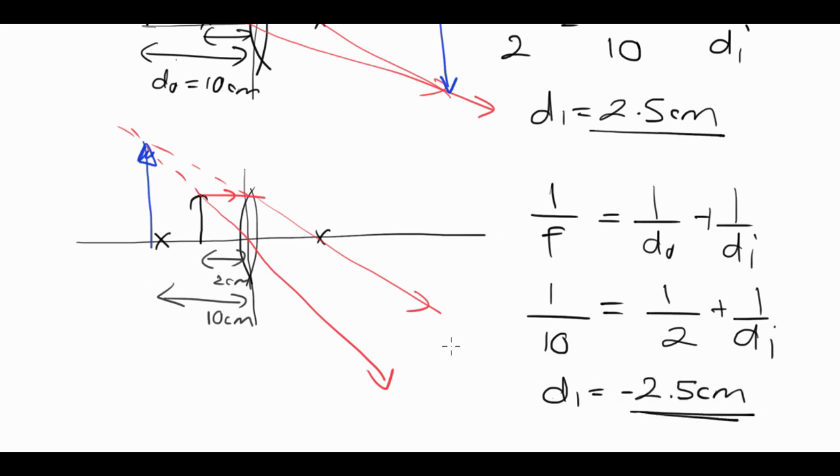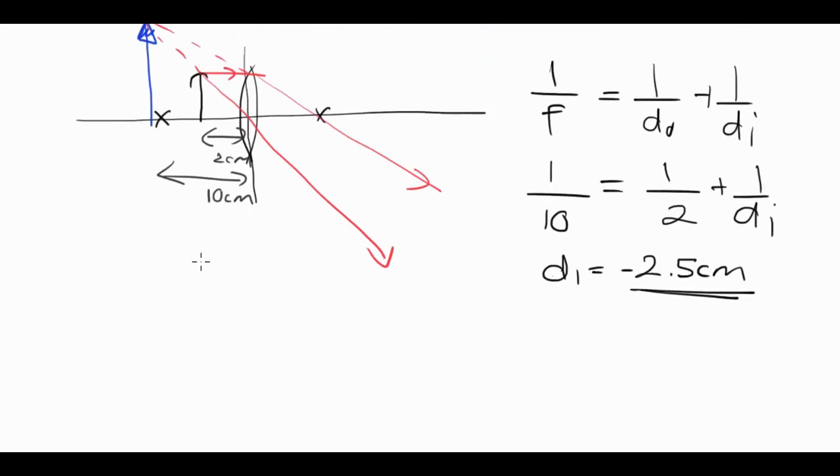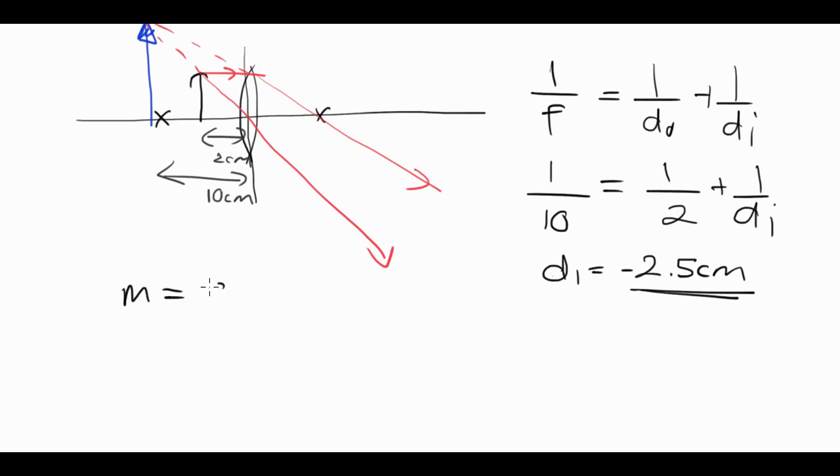The negative sign tells us that it is virtual, which is what we expected from the diagram. It's bigger than the object length, which we also expected. And if we then went away and worked at the magnification, we should see that the magnification will be greater than 1, which says that it's magnified.